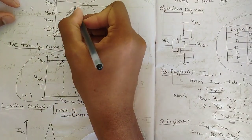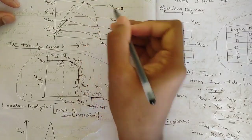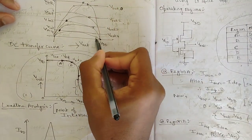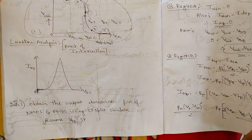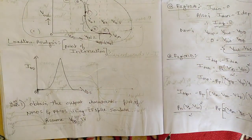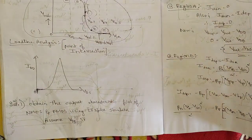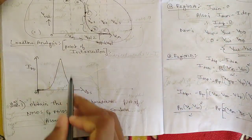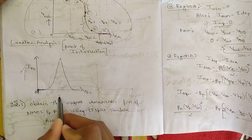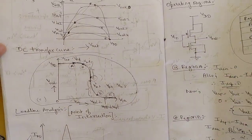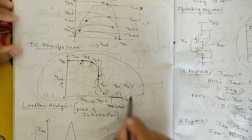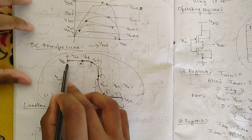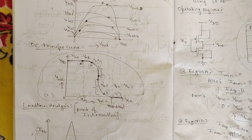Checking all points of intersections — similar to the Q-point analysis in BJT characteristics — gives us one combined plot. This is the IDD versus VDS plot used for load line analysis. From this we obtain the DC transfer curve, which is a very important plot showing drastic changes in the output voltage.